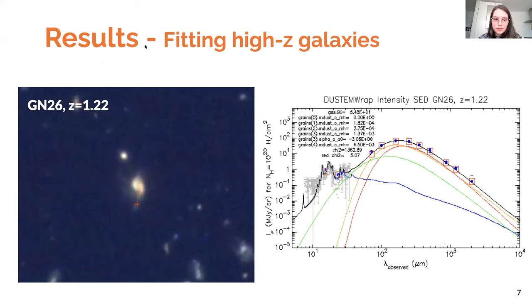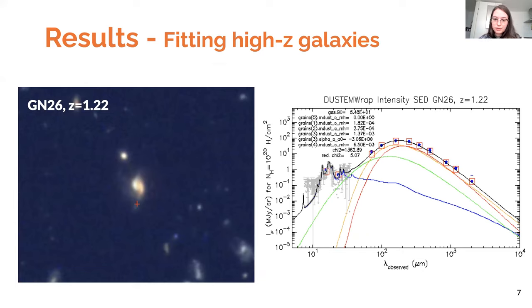Here is one of the galaxies we fitted, at redshift 1.22. The blue points are the photometry, but we also have a spectrum for this galaxy shown in gray in the background. The black is the full SED, but you can also see the different components of the dust — we have many different components of the blackbody emissivity of the small dust grains, and also the blue component which is the ionized PAH component.